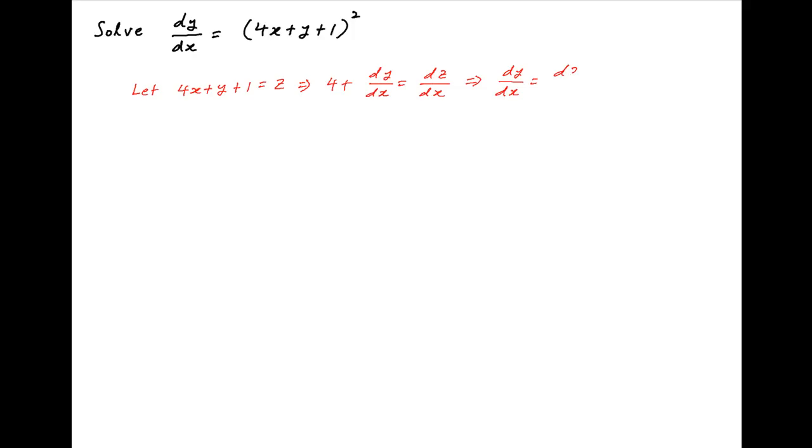Therefore, the given differential equation dy upon dx equals (4x plus y plus 1) whole square can be written as dz upon dx minus 4 equals z squared.